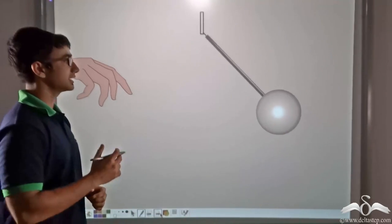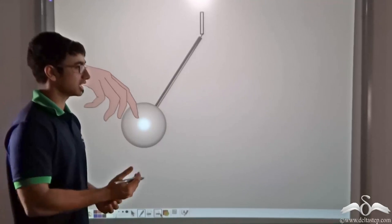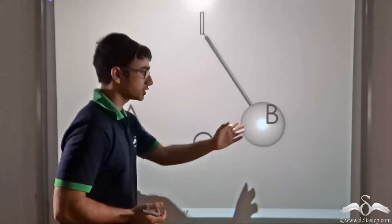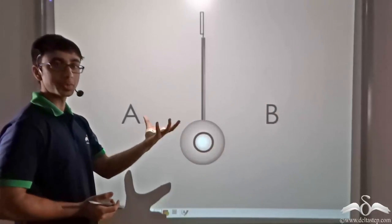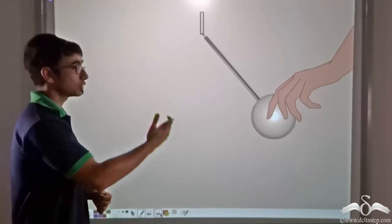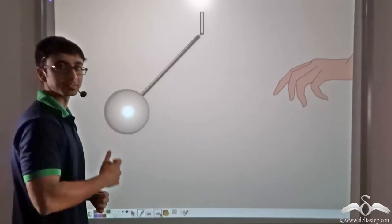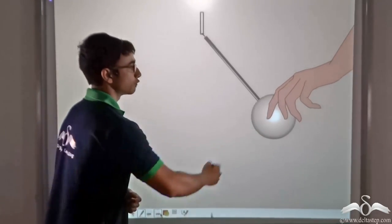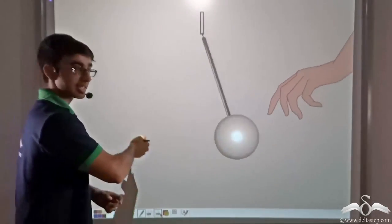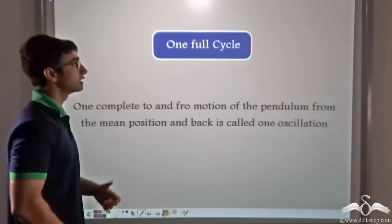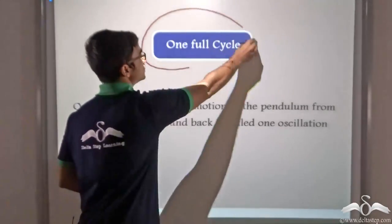Similarly, let us say we make the pendulum start from the central position. You will find that after swinging it comes back to its central position. So as we can clearly see, the motion of a pendulum is repetitive, and this motion from one end back to the other end and back to where it started from is known as one full cycle.